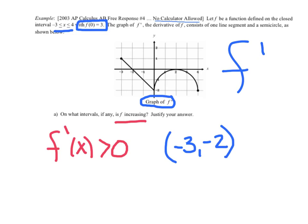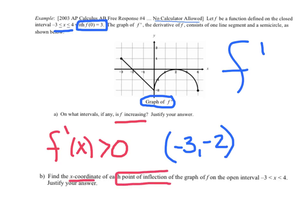Hopefully your sign chart matched that up. You don't want to get these wrong, they're easy questions. Just make a sign chart if you can't see that. Question B: Find the x coordinate of each point of inflection on the graph of f on the open interval and justify your answer.